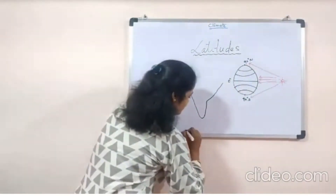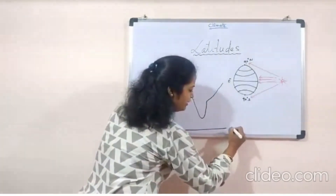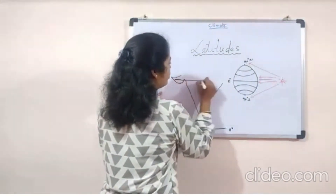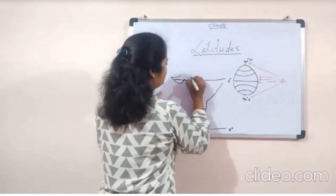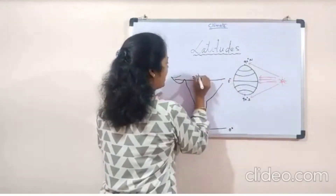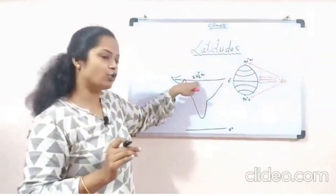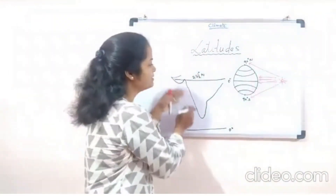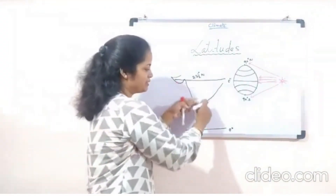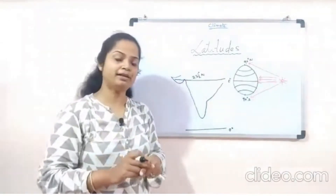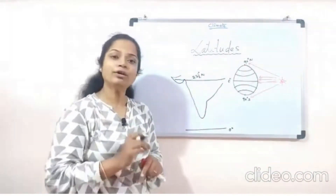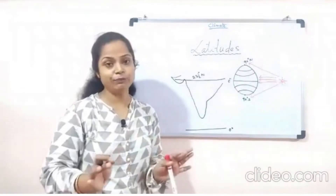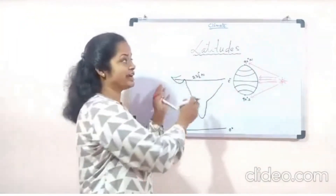Now applying this mechanism to our own country: we consider 0 degrees as the baseline. The Tropic of Cancer passes through half of India at 23.5 degrees north. Because of this, our country experiences two kinds of climate — both tropical and subtropical. In summer it is hot and humid, and in winter it is mild. That's all about latitude.